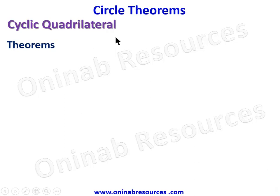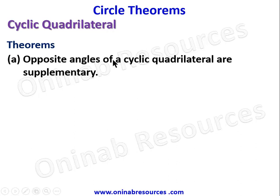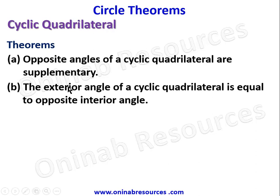We will now look at two theorems on cyclic quadrilaterals. The first: opposite angles of a cyclic quadrilateral are supplementary — that is, the sum of opposite angles equals 180 degrees. The second: the exterior angle of a cyclic quadrilateral is equal to the opposite interior angle.